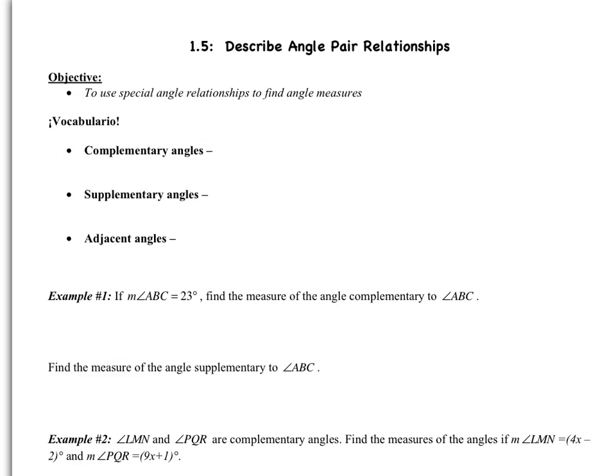Welcome to the video covering section 1.5. You should be on pages 17 and 18 in the green packet given in class. Section 1.5 covers describing angle pair relationships. Today we're going to learn some special angle relationships and use them to find angle measures. We'll start out with some vocabulary.